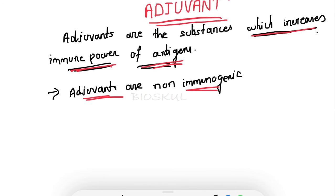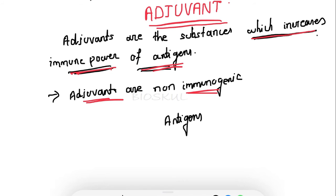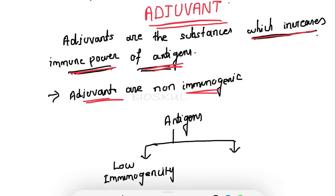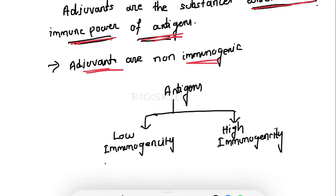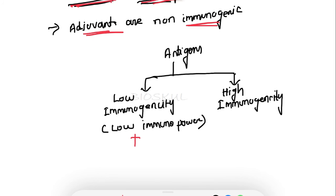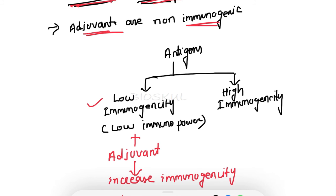Some antigens have low immunogenicity, or low immunopower, while others have high immunogenicity. When an antigen with low immunogenicity is conjugated with an adjuvant, the immunopower increases — that is, the immunogenicity is boosted.